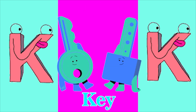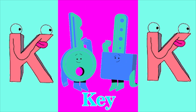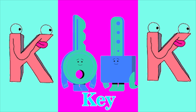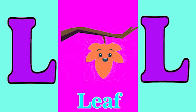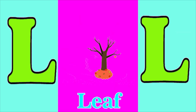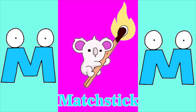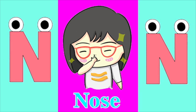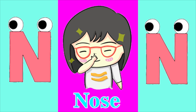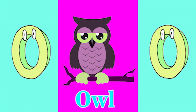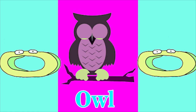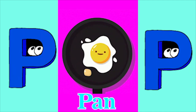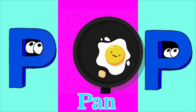K for keet, L for leaf, M for magic, N for nose, O for owl, P for pan.